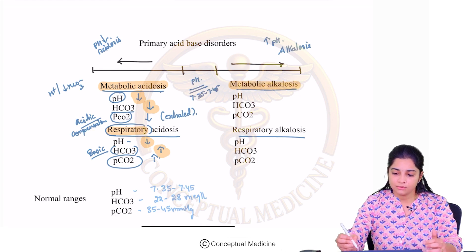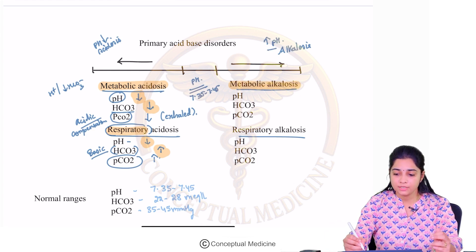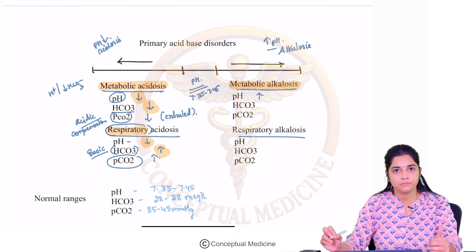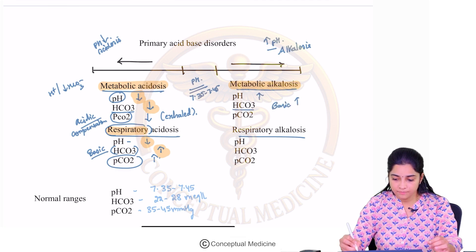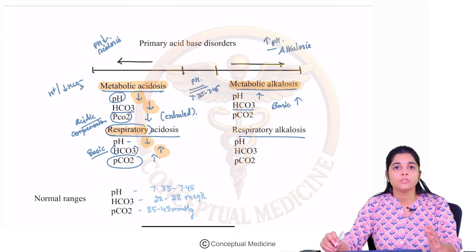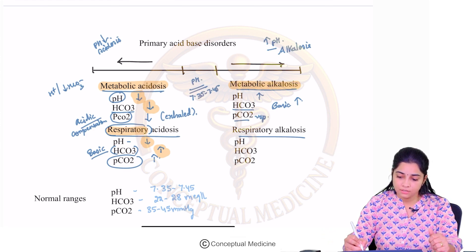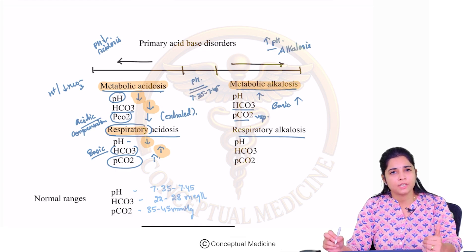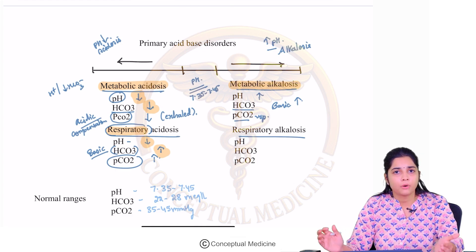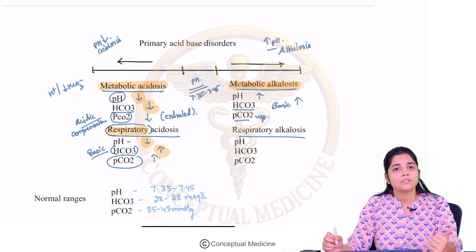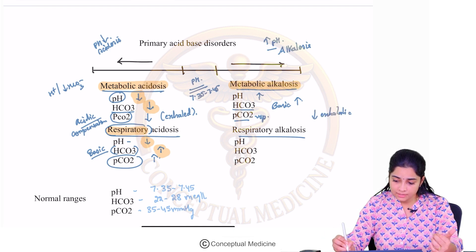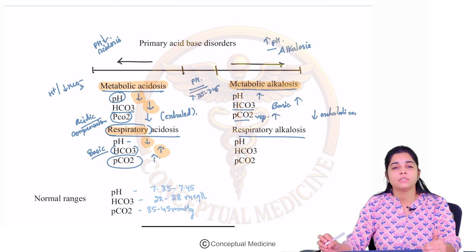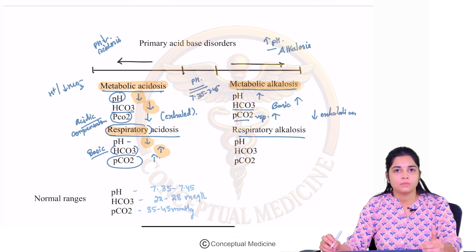In metabolic alkalosis, the pH is higher than 7.45. The term metabolic means that the bicarbonate, which is basic, increases — there is retention of bicarbonate. Since it is a metabolic problem, compensation has to be respiratory. The body is becoming alkalotic, so it accumulates CO2 (the acidic gas) by decreasing exhalation. Therefore, PCO2 levels also increase in response to metabolic alkalosis.